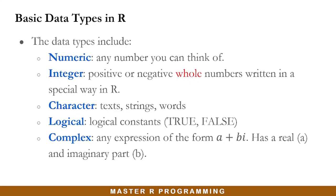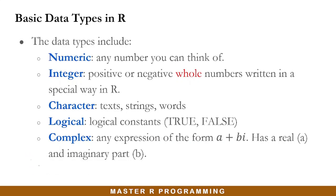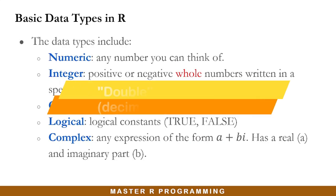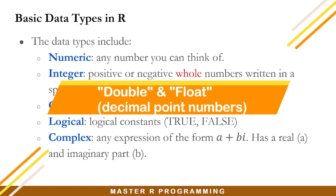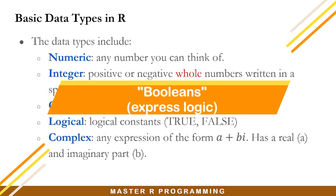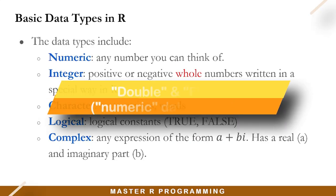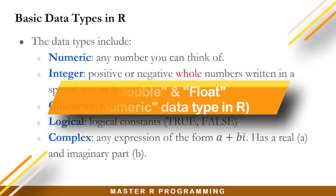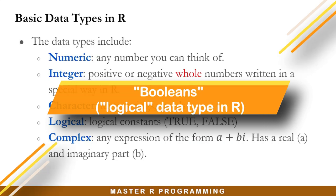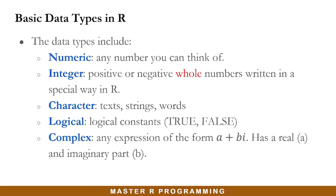There is one more data type which will not be covered in this lesson but much later — the factor data type. We use that data type to handle categorical variables. Additionally, you will get to hear of other data types like double and float, which represent decimal numbers, and booleans, which also express logic. In R, double and float types are mainly treated as numeric, and booleans are recognized as logical data types.